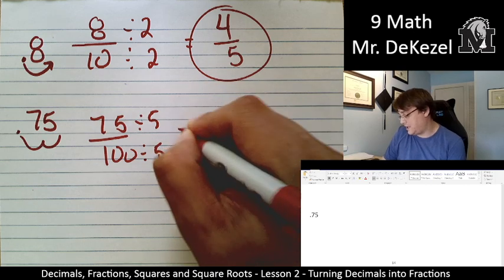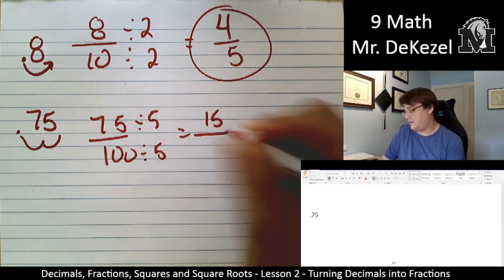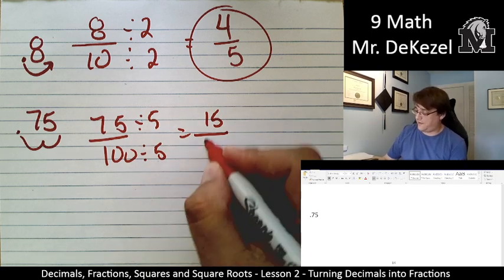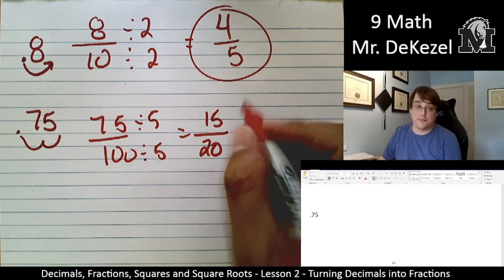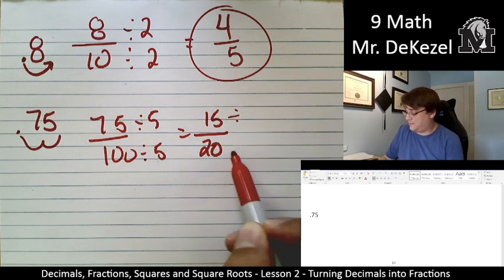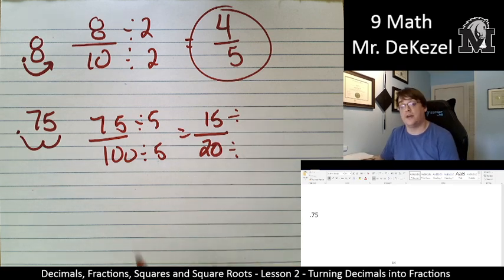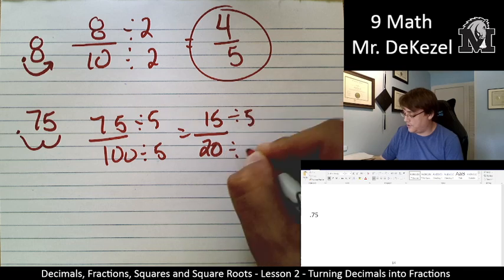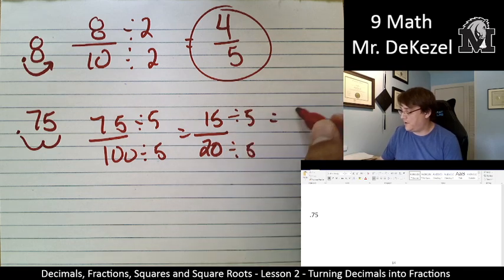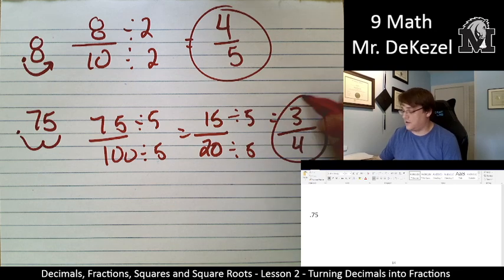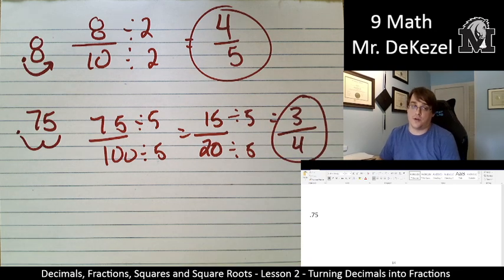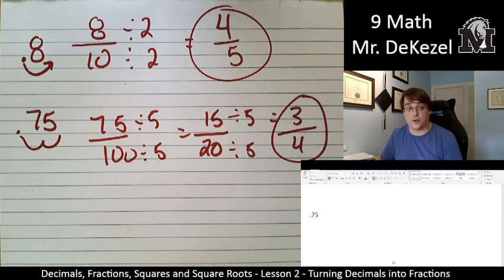I can divide both of those by 5 again. So this is further reducible. We're going to keep going until you can't reduce it anymore. If I divide both of these by 5, 15 divided by 5 is 3 and 20 divided by 5 is 4. That is as low as it can go. 3 quarters. And you probably already knew that 0.75 was 3 quarters of something.